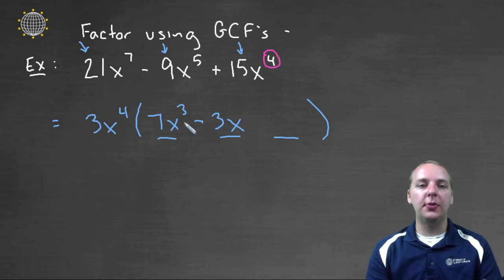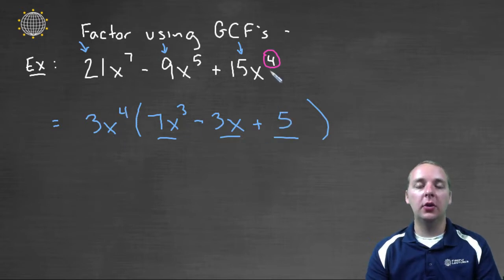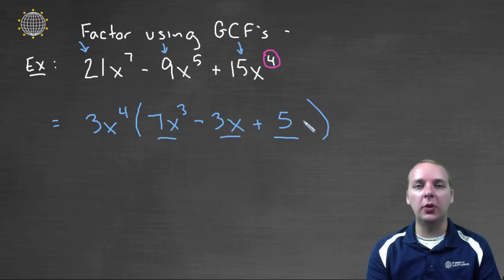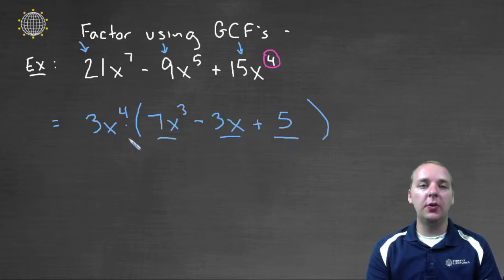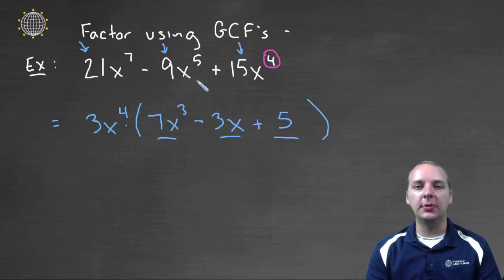For the last term: three times what gives you plus fifteen? We'd have plus five. X to the fourth times what gives x to the fourth? That's just one, so we don't need to write it — we simply have five. We've factored this polynomial using the greatest common factor of these three terms.